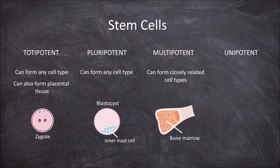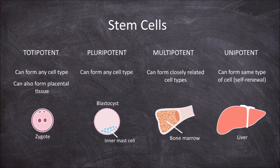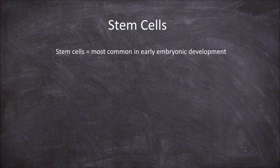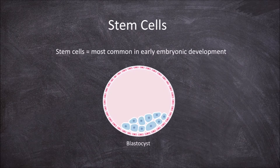Unipotent stem cells cannot differentiate into new cells but do have the ability to self-renew. For example, liver stem cells can generate new liver cells. Stem cells are most common in early embryonic development at the blastocyst stage in multicellular organisms, because at this stage most of the cells have yet to differentiate. As an organism continues through embryogenesis, more and more of these cells differentiate and become specialised, and fewer stem cells are present.